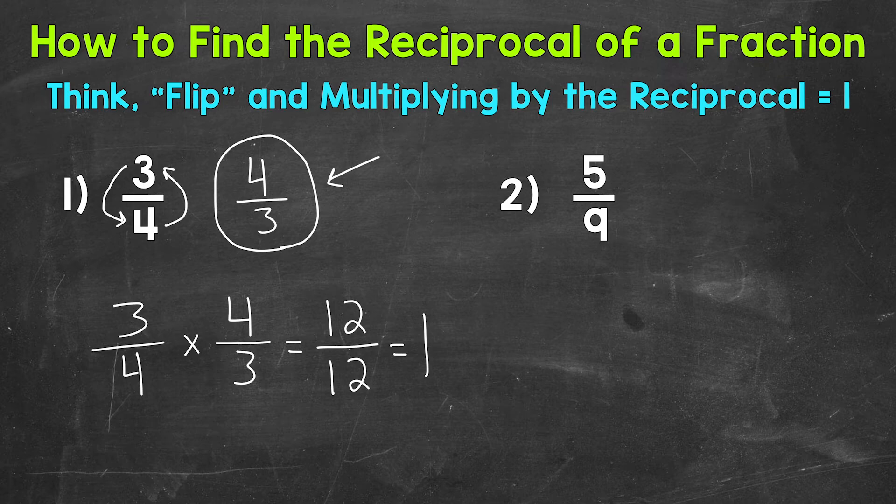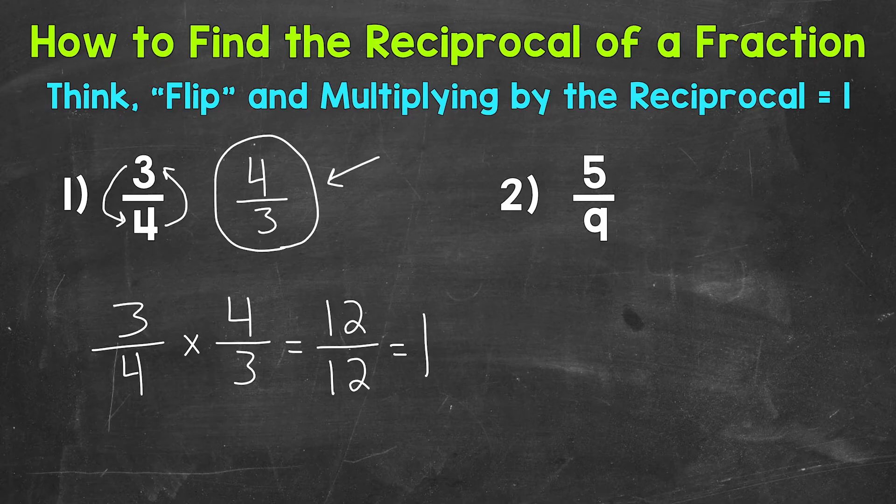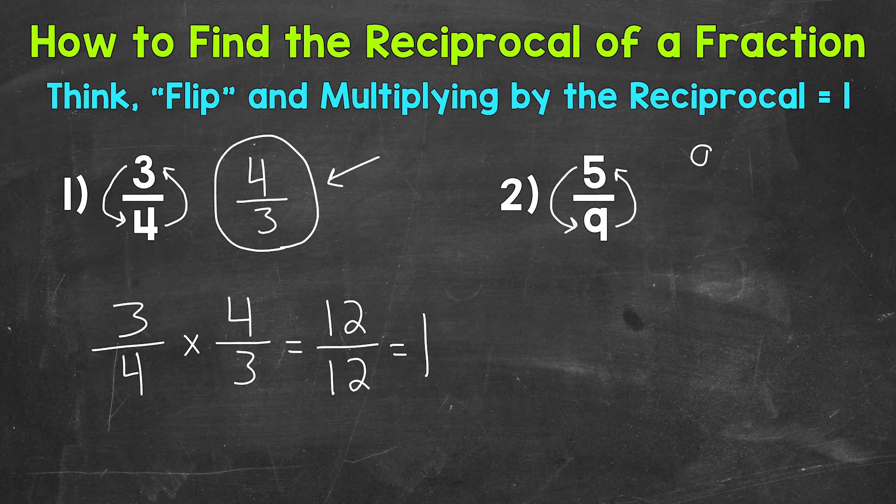So again, let's flip the fraction to get the reciprocal. The denominator, the 9, is going to become the numerator, and the numerator of 5 is going to become the denominator. So we get 9 over 5, 9 fifths for our reciprocal.